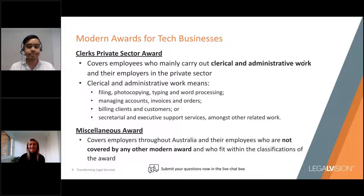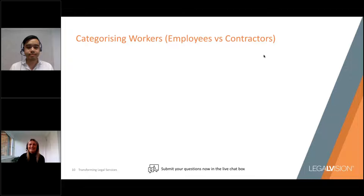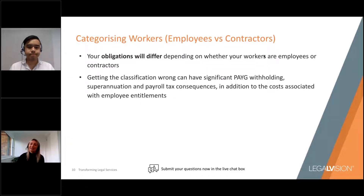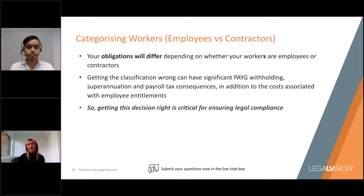As we can see, there are quite a number of minimum entitlements owing to employees. As a business owner, understanding the correct entitlements you owe to your workers is essential, as your obligations will differ substantially depending on whether your workers are employees or independent contractors. Getting this classification wrong can have significant repercussions — not only regarding PAYG withholding, superannuation and payroll tax, but also costs associated with employee entitlements. Classifying your workers correctly is critical for ensuring legal compliance.